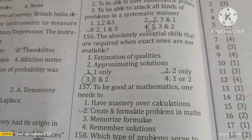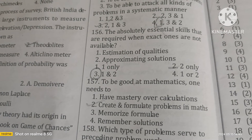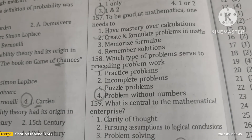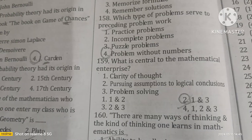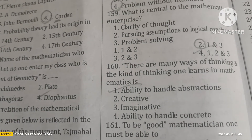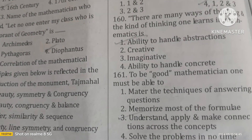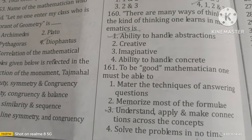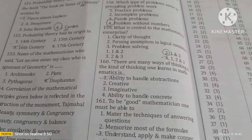The absolutely essential skill required when exact values are not available is estimation and approximating solutions. To be good at mathematics, one needs to create and formulate problems. Problems without numbers serve as preceding problem work. What is central to the mathematical enterprise is clarity of thought and problem solving. The kind of thinking one learns in mathematics is the ability to handle abstractions. To be a good mathematician, one must understand, apply, and make connections between concepts. These are the model questions from Unit 1 — please practice them.